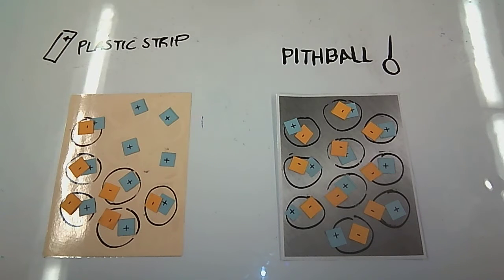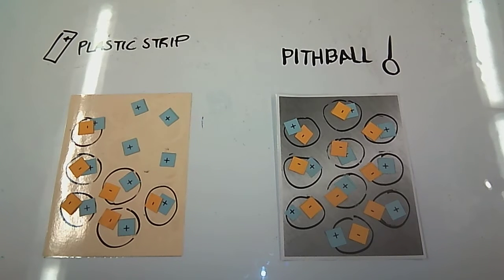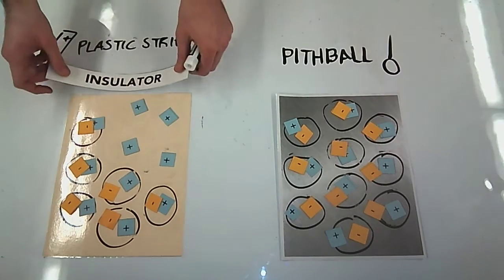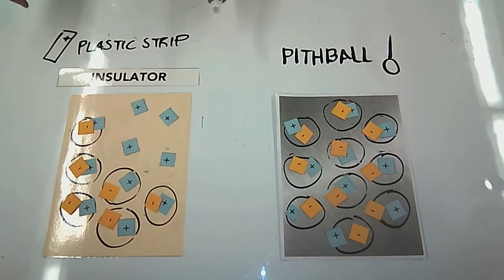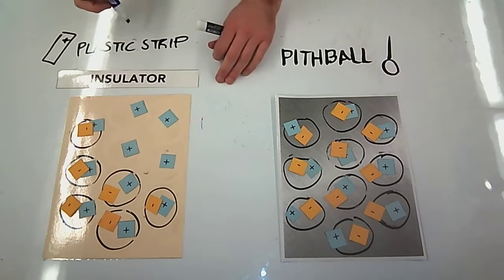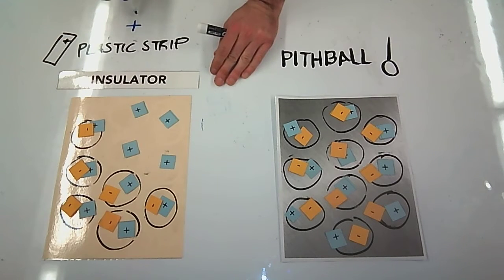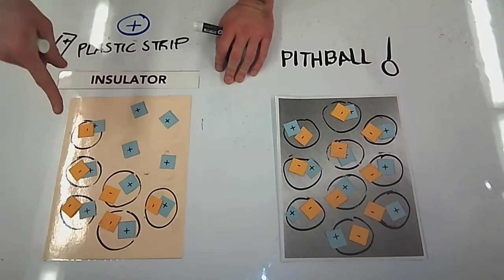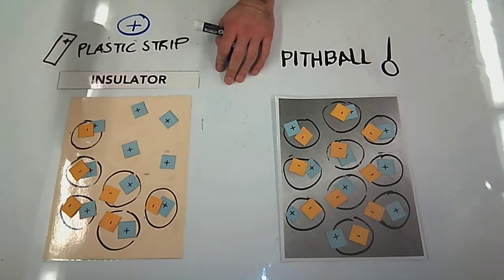Let's first talk about our objects. We have our plastic strip, this is going to be an insulator, which means electrons can't move freely. It's positively charged, which means it has less electrons compared to protons.